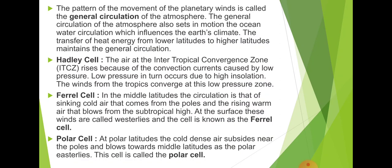The pattern of movement of the planetary winds is called the general circulation of the atmosphere. The general circulation of the atmosphere also sets in motion ocean water circulation, which influences the earth's climate. Ocean water helps to regulate the climate of a particular place — the wind helps the ocean move from one region to another. The transfer of heat energy from lower latitude to higher latitude maintains the general circulation. The Hadley cells, from 30° north to 30° south, form the intertropical convergent zone.